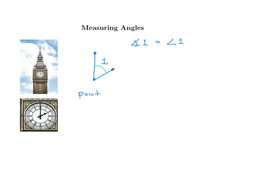Another way to label angles is to call the points letters — like A, B, and C. We could call this angle ABC. The convention is the letter in the middle is the point from which the two rays emanate. So you would not call this angle BAC; it would have to be ABC. Likewise, you could also call it CBA, as long as the vertex point is in the middle.